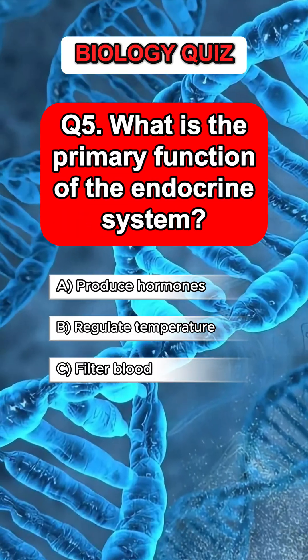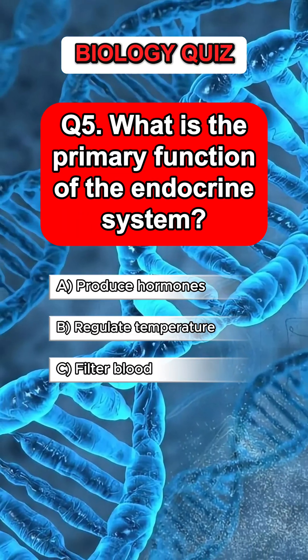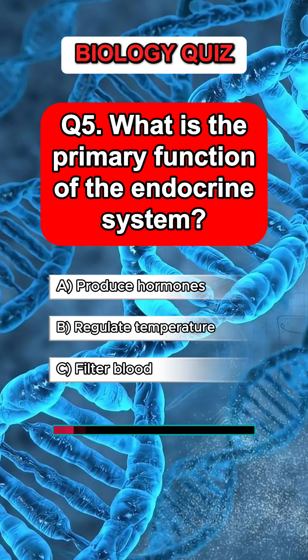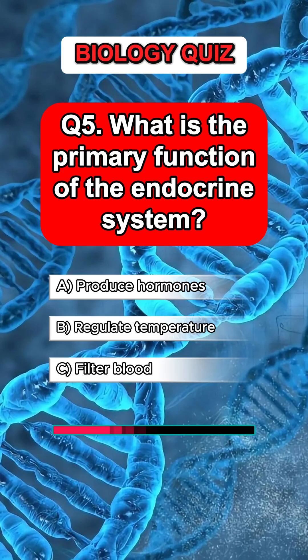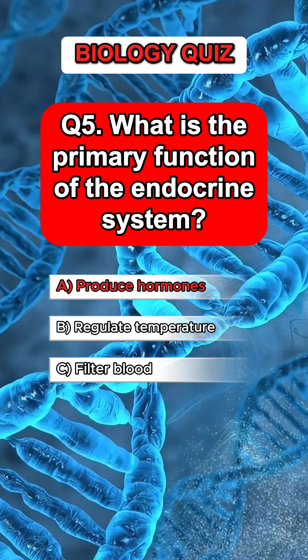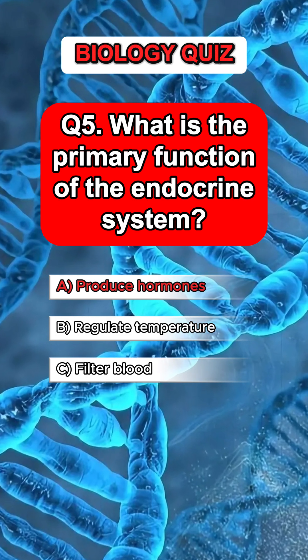Question 5. What is the primary function of the endocrine system? Answer A. Produce hormones.